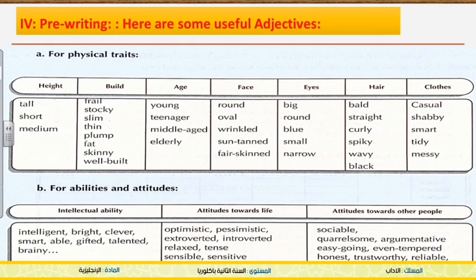Concerning eyes, there are some adjectives we can use: big eyes, round eyes, blue eyes, brown eyes — like in the text of Amina. For hair, we can speak about bald, straight, curly, spiky, etc. Concerning clothes, there are different kinds: casual clothes, everyday clothes, shabby, smart, tidy, messy. It depends on the appearance of the person you are going to describe in your paragraph.